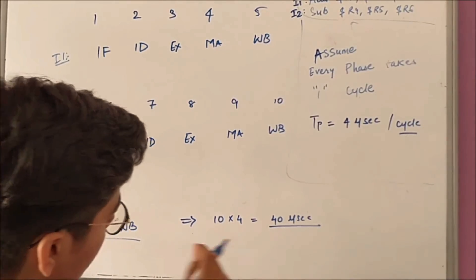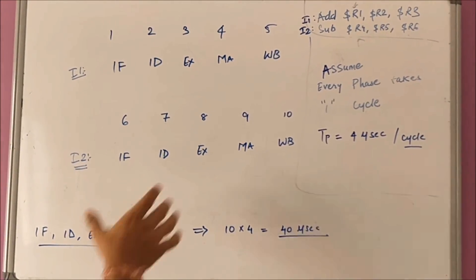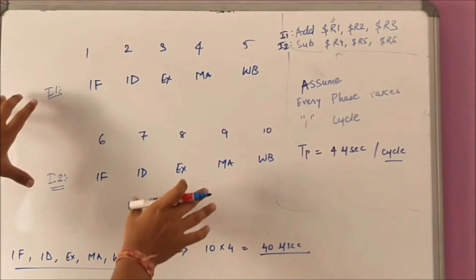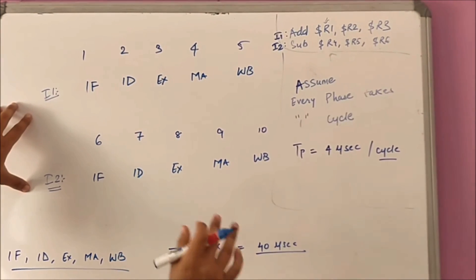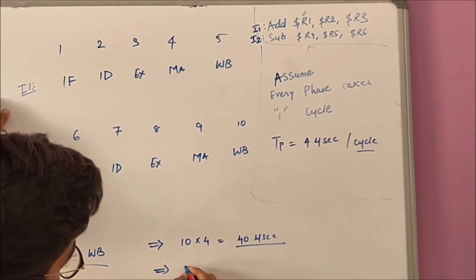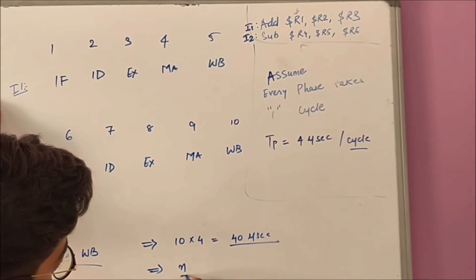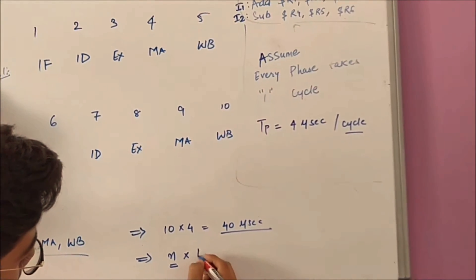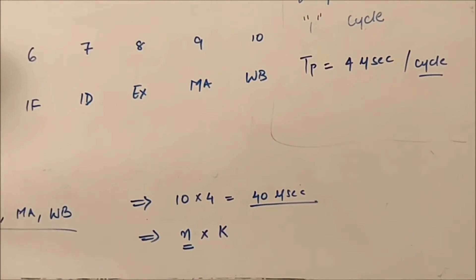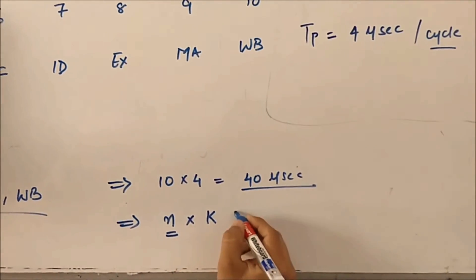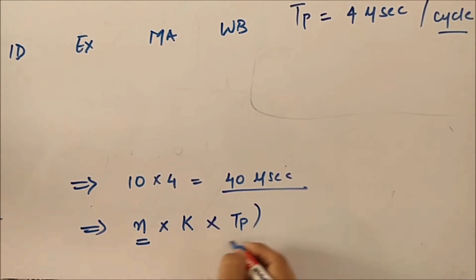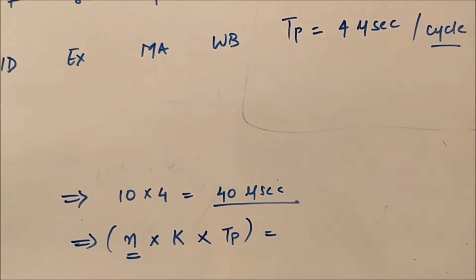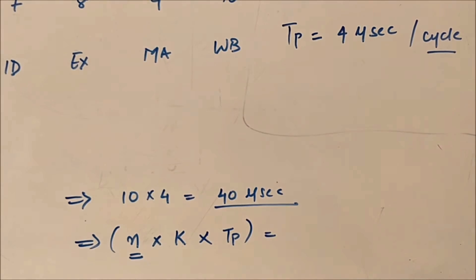In general, it will be 5 cycles per instruction, so there will be 10 cycles. The formula is: number of instructions n, multiplied by k which is the number of cycles, multiplied by tp. So this is the time taken by the instructions to get executed.